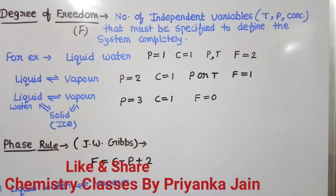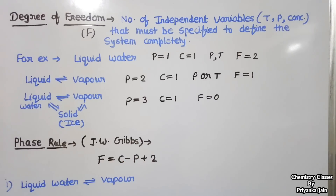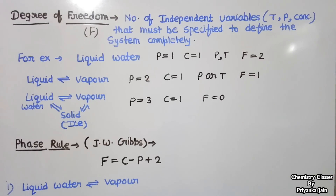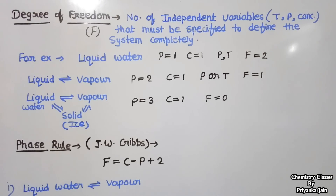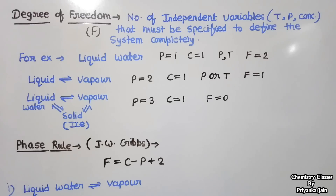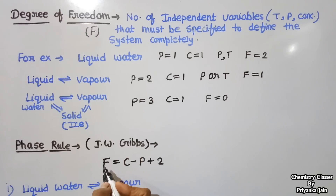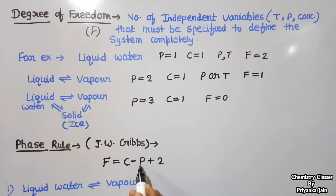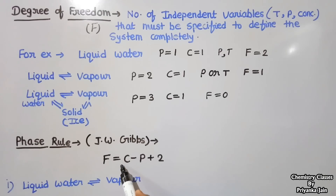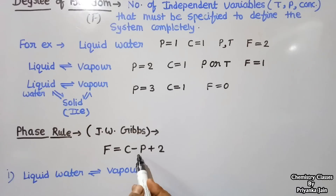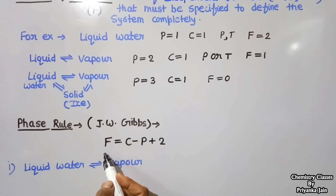Now we come to the phase rule. The phase rule was given by J.W. Gibbs and is very important — questions are sometimes directly asked on it. The phase rule is used to find the degree of freedom. The formula is: F = C − P + 2, where C is the number of components, P is the number of phases, and F is the degree of freedom.